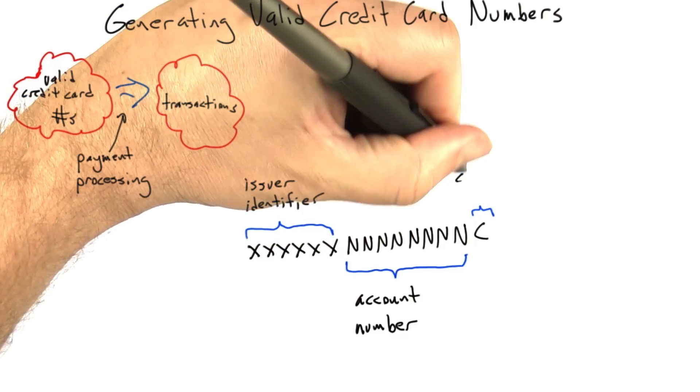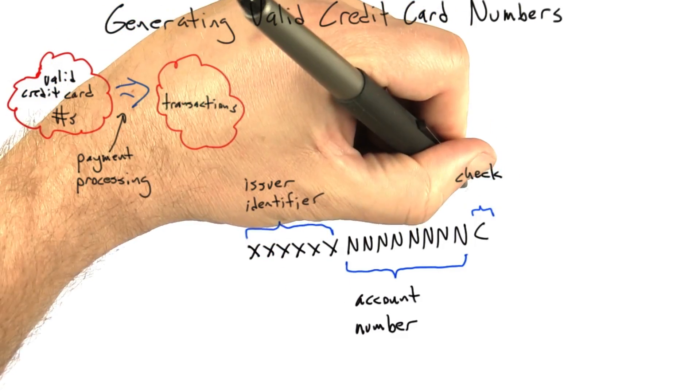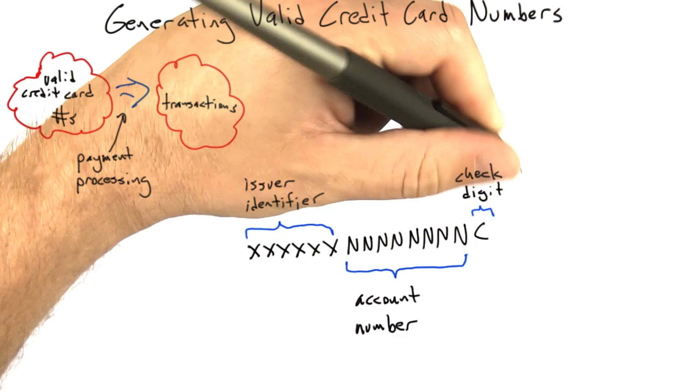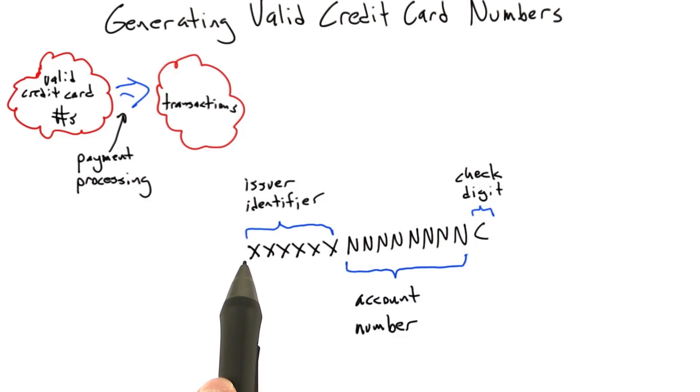And then finally, at the end, there's a check digit, and this is computed algorithmically from the preceding numbers, and the function of the check digit is to serve as a validity check for a credit card number.